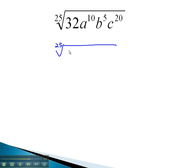Calculating the prime factorization of 32, we end up with 2 to the 5th power, a to the 10th, b to the 5th, c to the 20th.